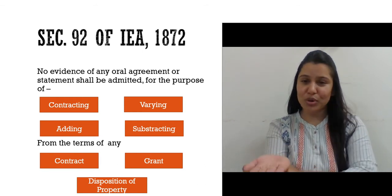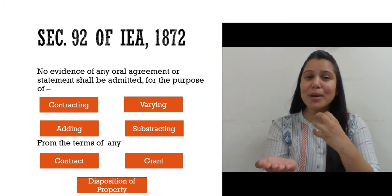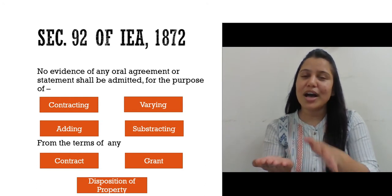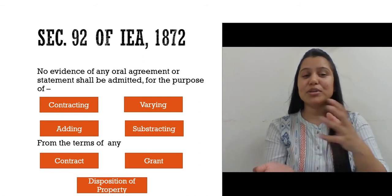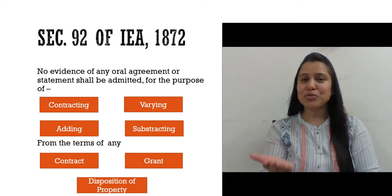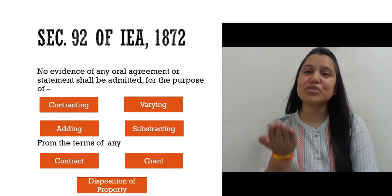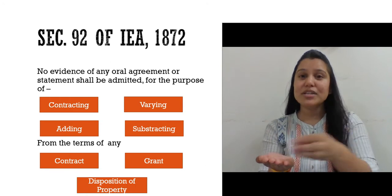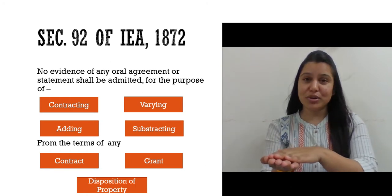If I have the document in hand and I show it before the honourable court, I cannot by oral evidence either add, contradict, vary, or subtract any of the contents written in it — for the terms of any contract, grant, or disposition of property. When any contract, grant, or disposition of property is in writing, I cannot by oral evidence add, subtract, contradict, or vary the contents of the document.